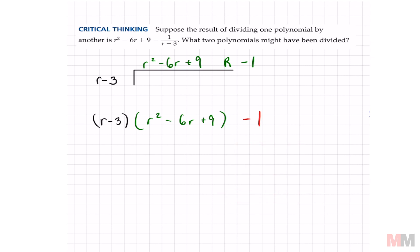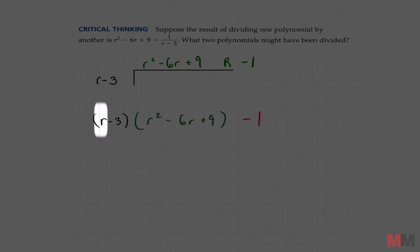And here's how I like to distribute. We're gonna start with that first term r, and I'm gonna multiply it to the three terms in this trinomial right here. r times r squared is r cubed. Then I'm gonna have negative 6r squared plus 9r.